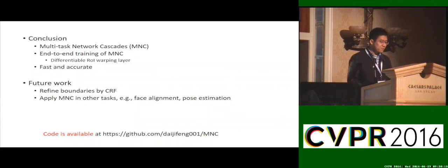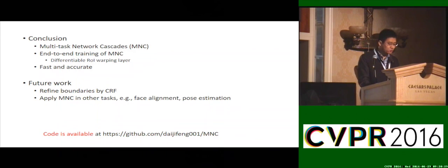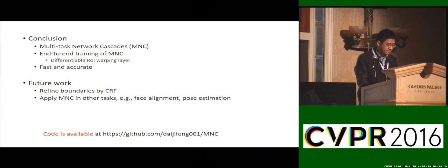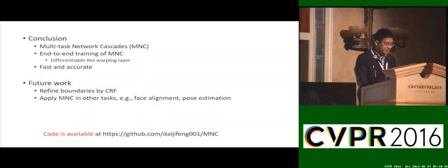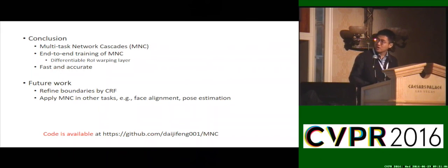In conclusion, we developed multi-task network cascades to address the challenging problem of instance-aware semantic segmentation. We developed the corresponding end-to-end training algorithm for MNCs, enabled by a differentiable ROI warping layer. Our method is fast and accurate. Potential future work includes further refining boundaries using CRF (conditional random field), and the philosophy of multi-task network cascades can be applied to other tasks such as face alignment and pose estimation. Our code is available on GitHub — please check it out.